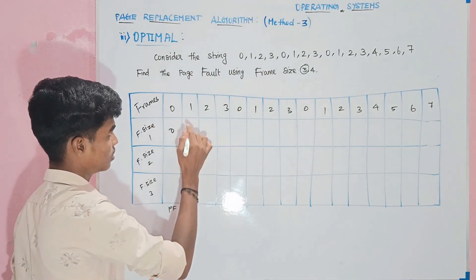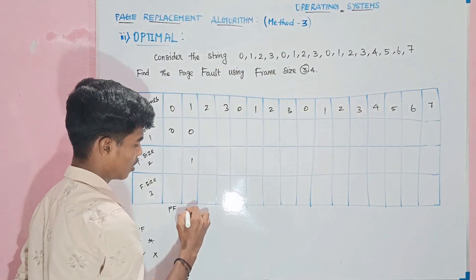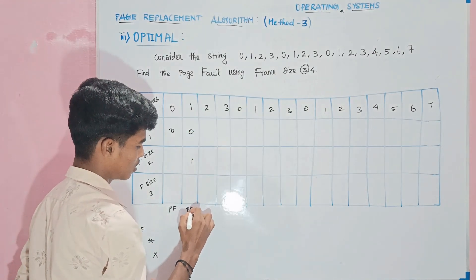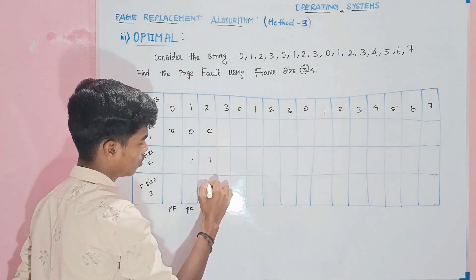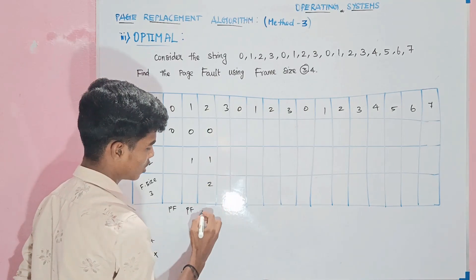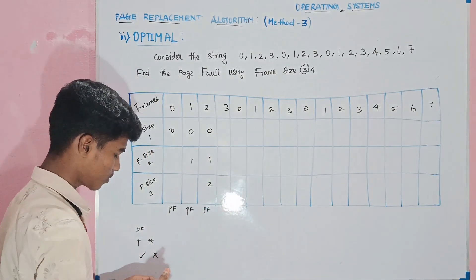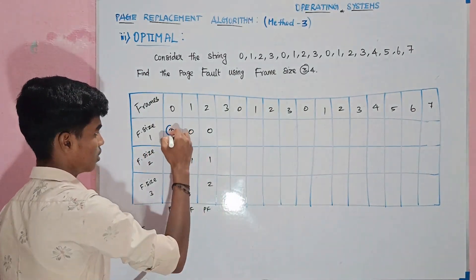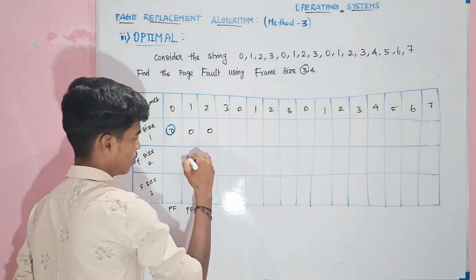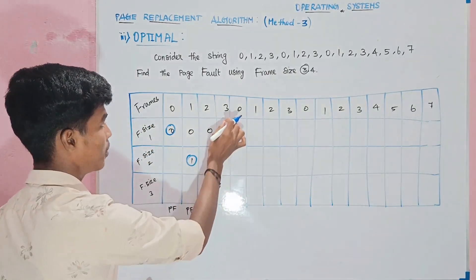Page fault. Then here is 1: insert 0, 1 — page fault. And then 0, 1, 2 — here is the page frame, depending on the default. Now 0, 1, 2.